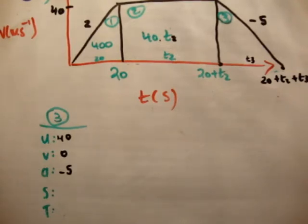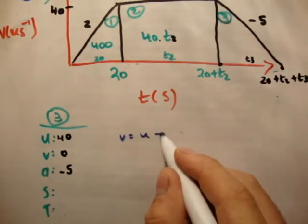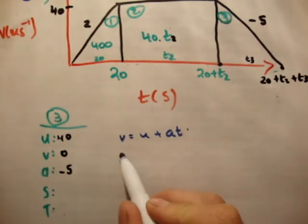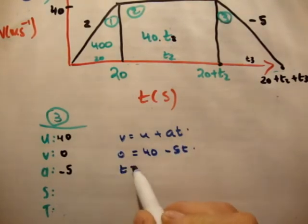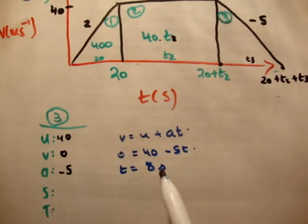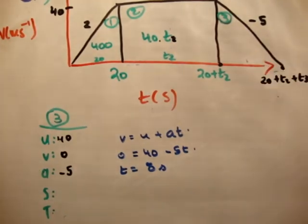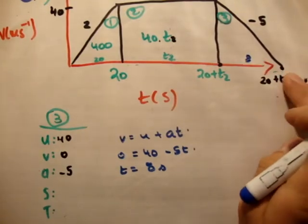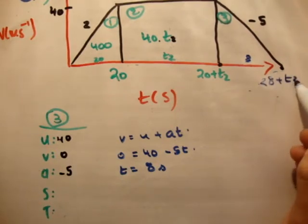So, if we try v equals u plus at, we see the only unknown is t, therefore this will work. So we have 0 equals 40 minus 5t, t equals 8 seconds. Therefore, t3 up here is equal to 8 seconds, and therefore at this point here is equal to 28 plus t2 seconds.